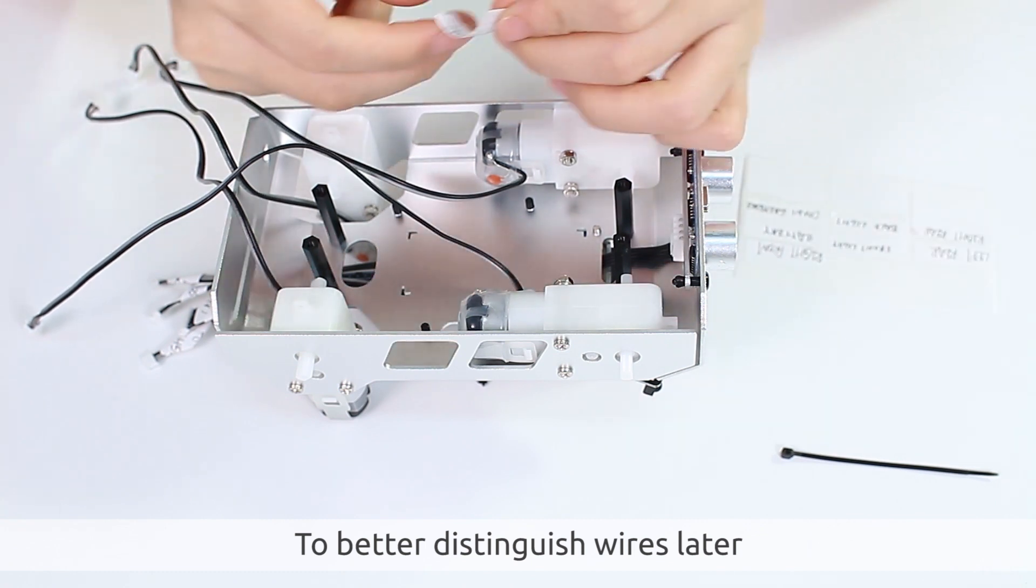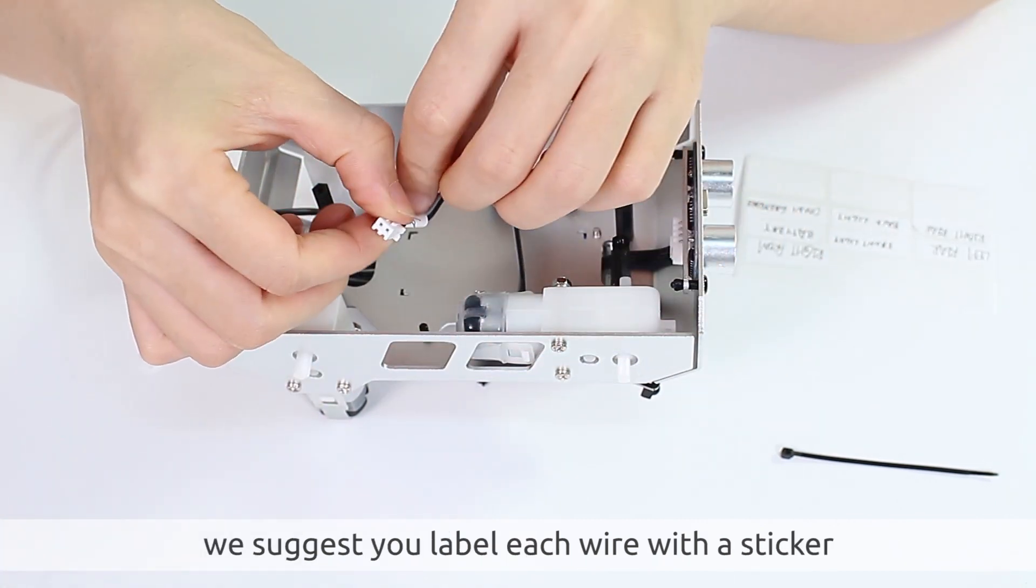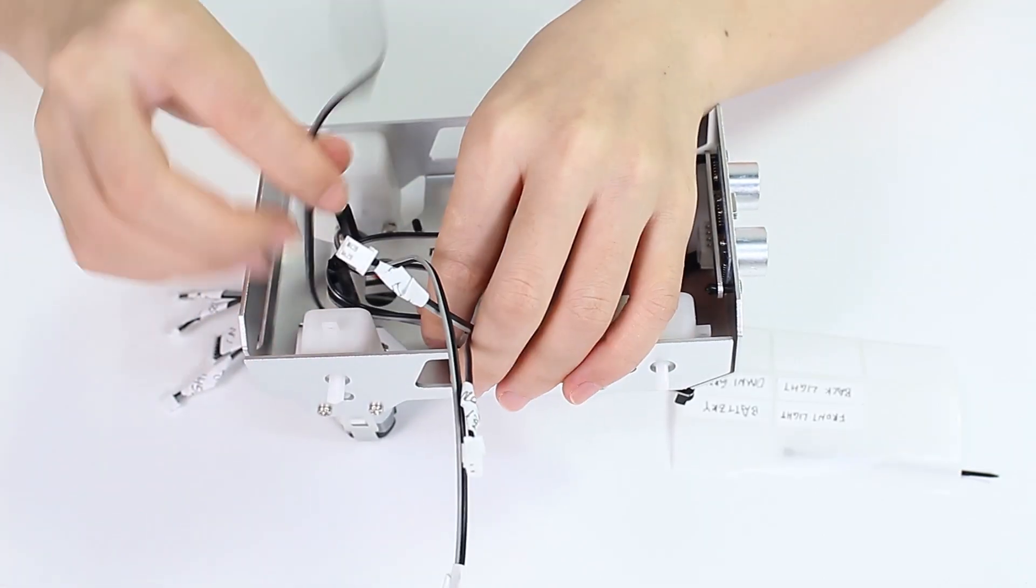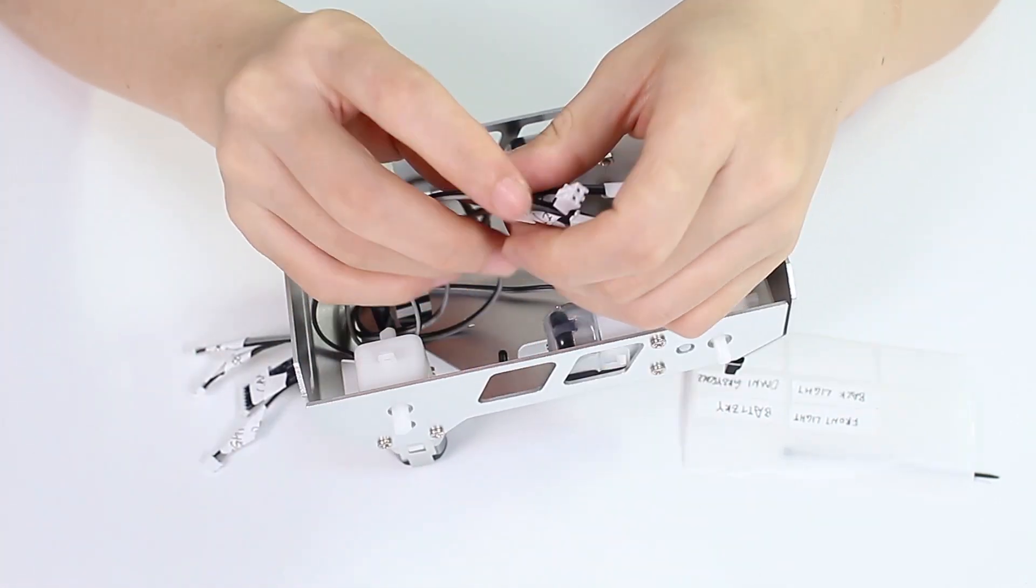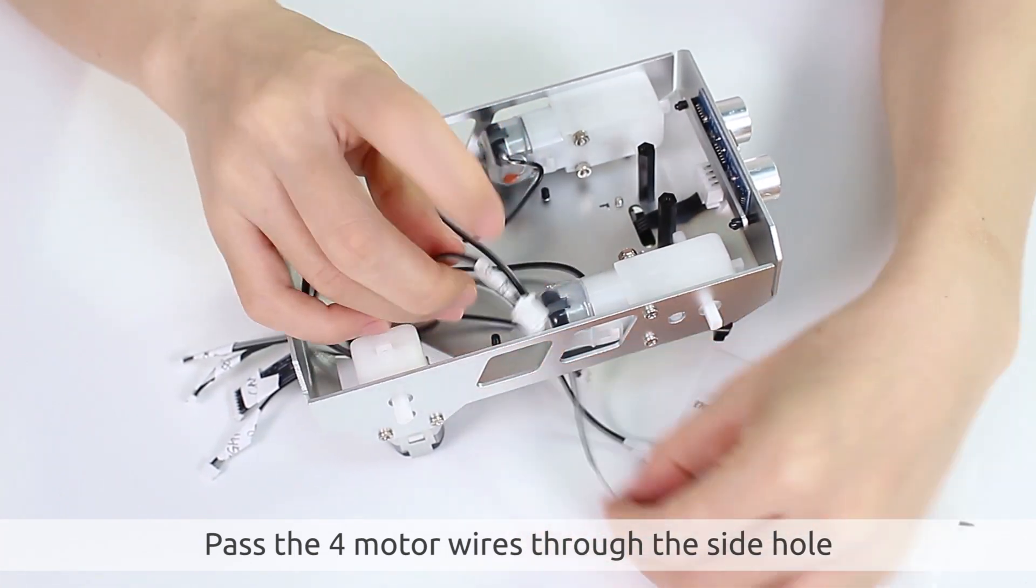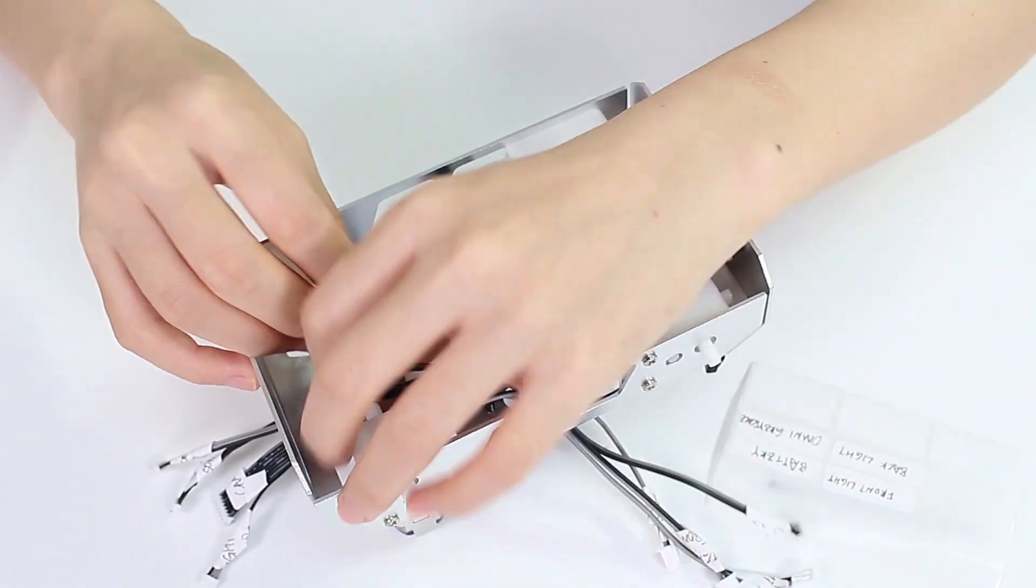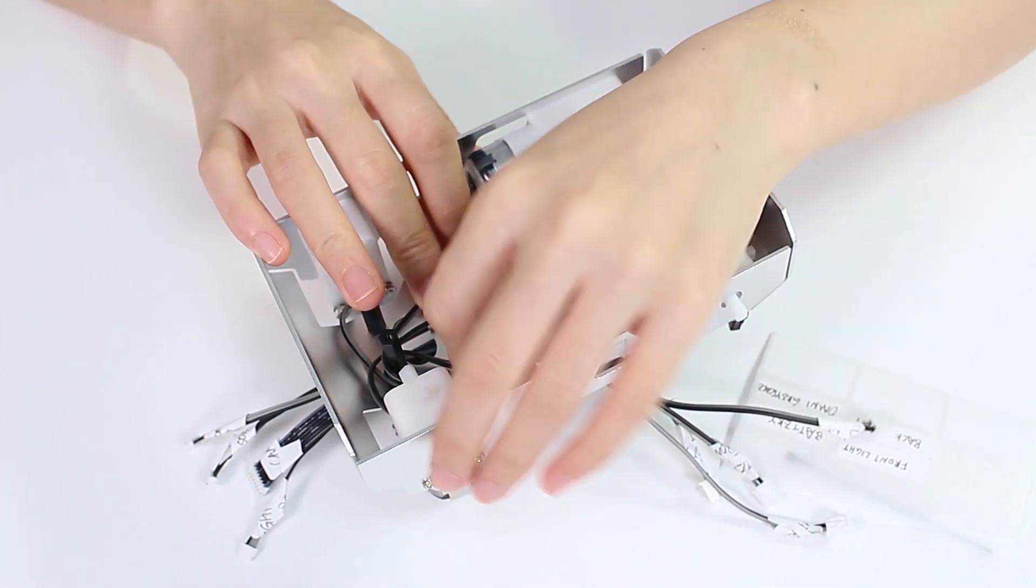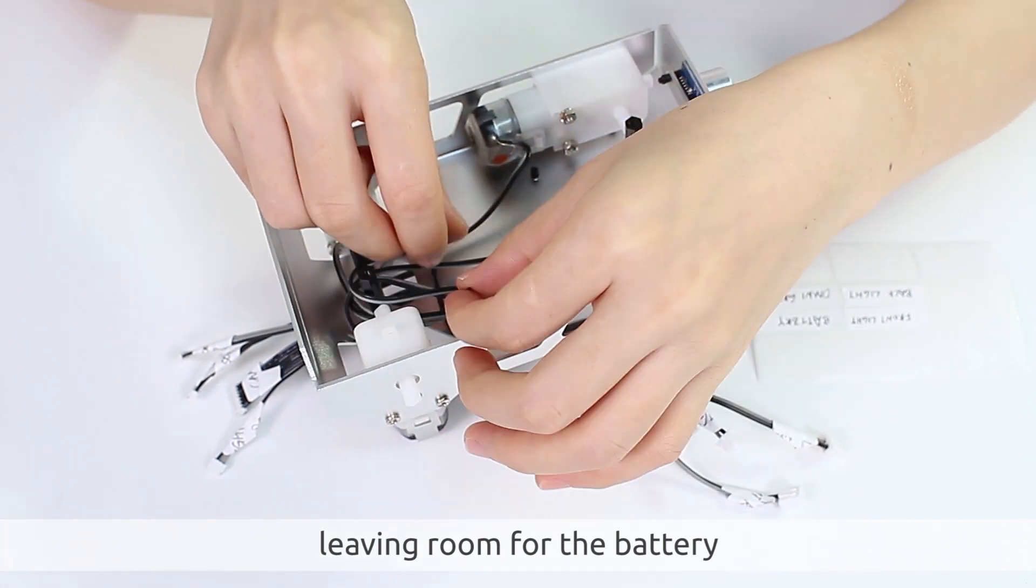To better distinguish wires later, we suggest you label each wire with a sticker. Pass the four motor wires through the side hole and tidy them up with a cable tie, leaving room for the battery.